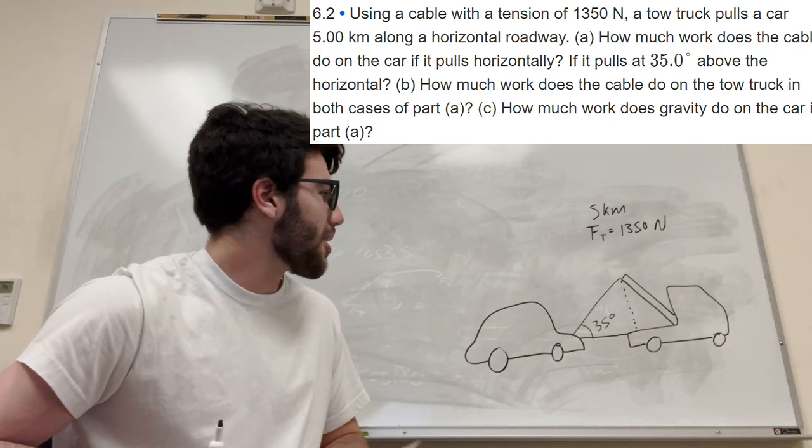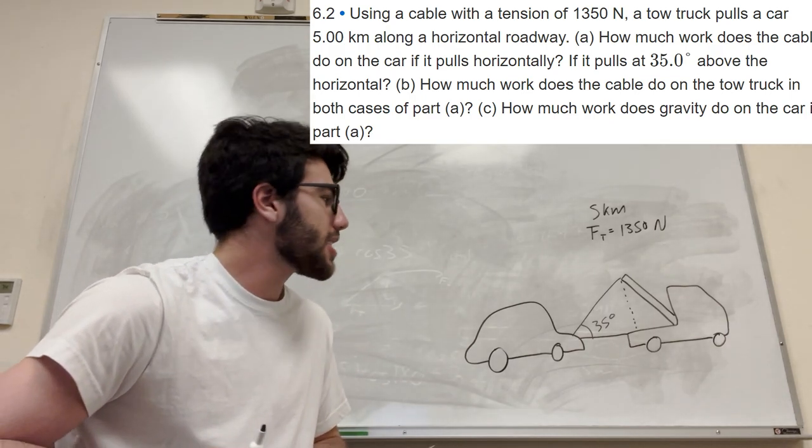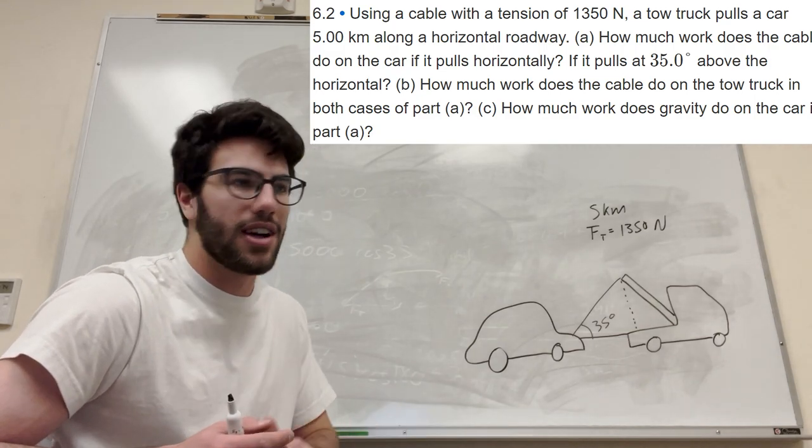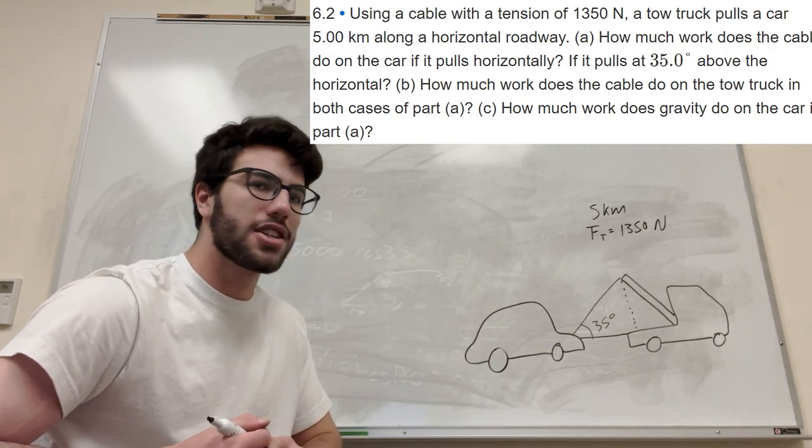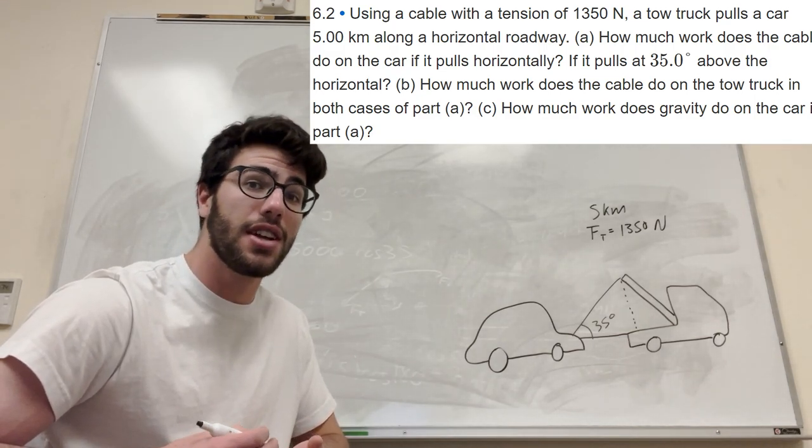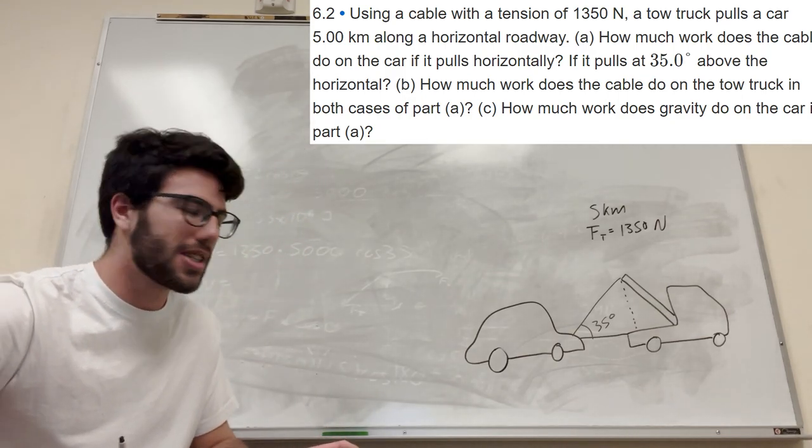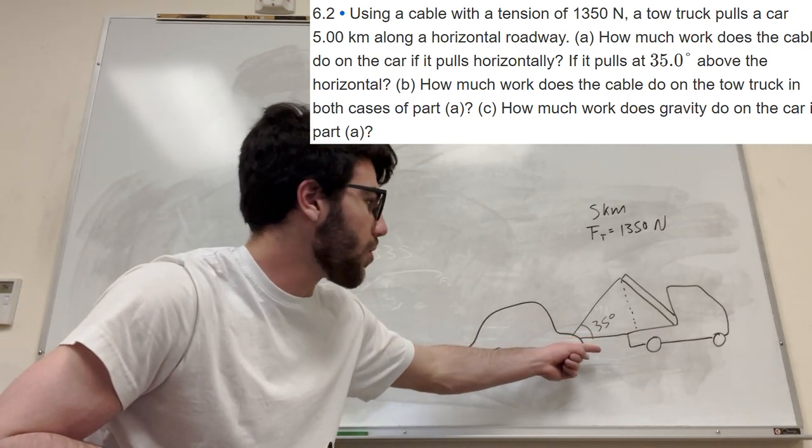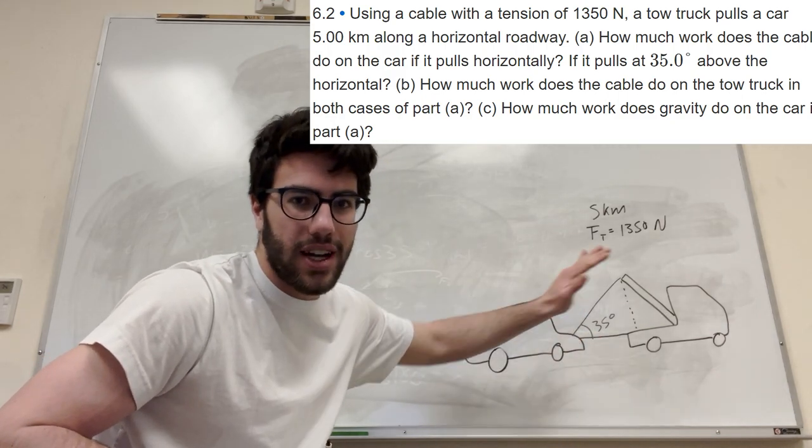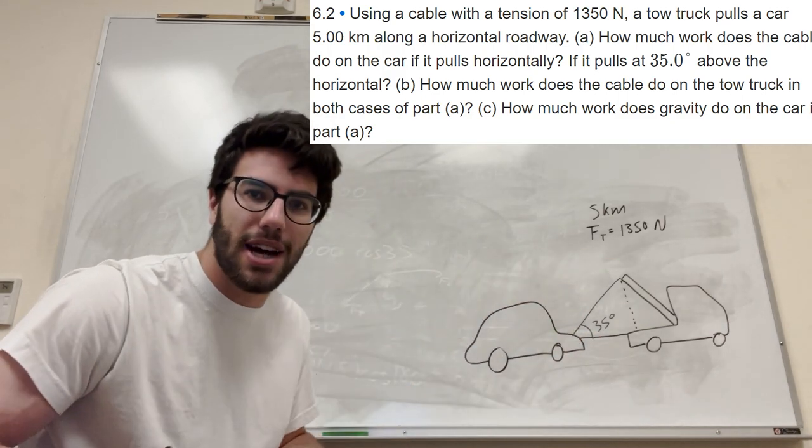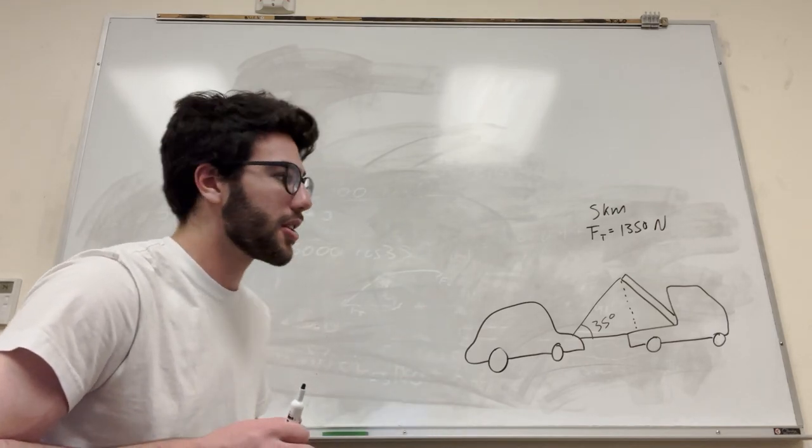What's up Cal gang? Alright, so we got this tow truck problem here. Basically, let me explain. The tow truck is pulling this car 5 kilometers, and we know that the force tension in the string is 1,350 N. There's two possibilities here. You can either pull the cable horizontally, or we can pull it at a 35 degree angle elevated. We're going to test how much work is done by both of those systems.